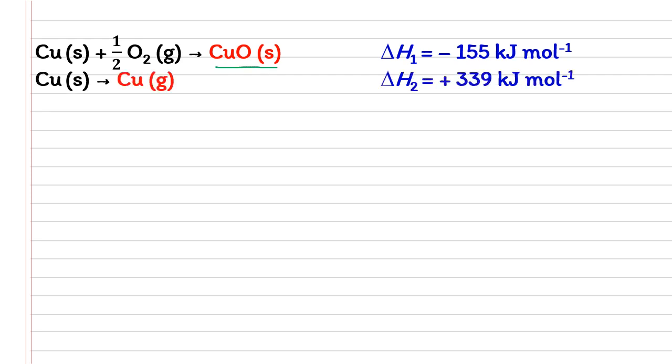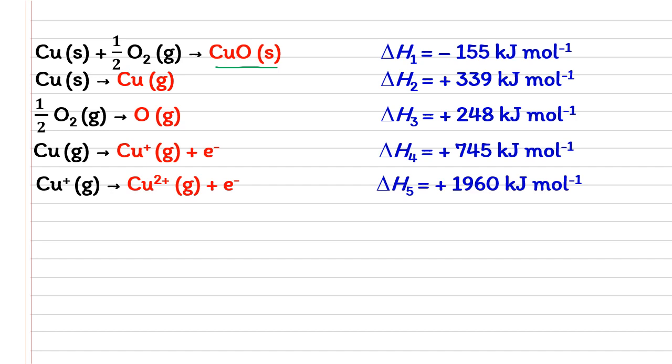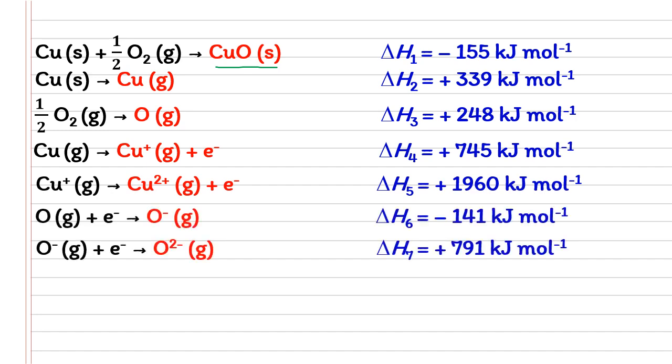We'll write the thermochemical equations for each reaction. This is your enthalpy of formation since we have 1 mole of copper 2 oxide formed, followed by atomization energy of copper. And then we have atomization for oxygen, followed by first and second ionization energy for copper. Then we have first and second electron affinity for oxygen. And lastly, the lattice energy that we want to find.